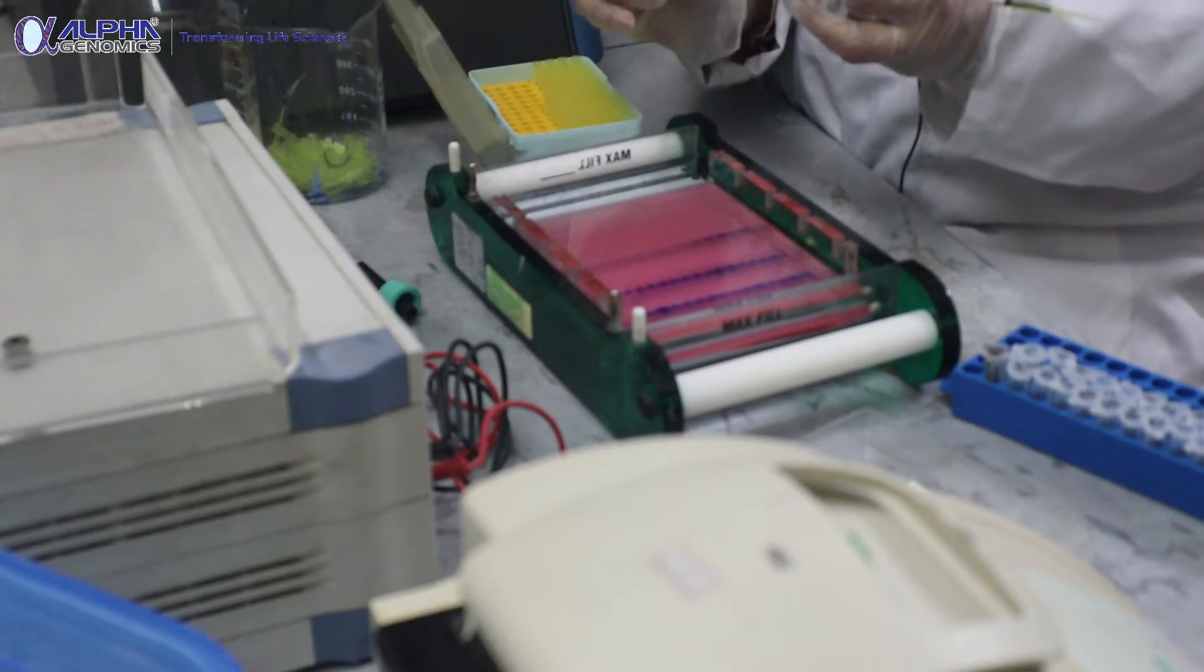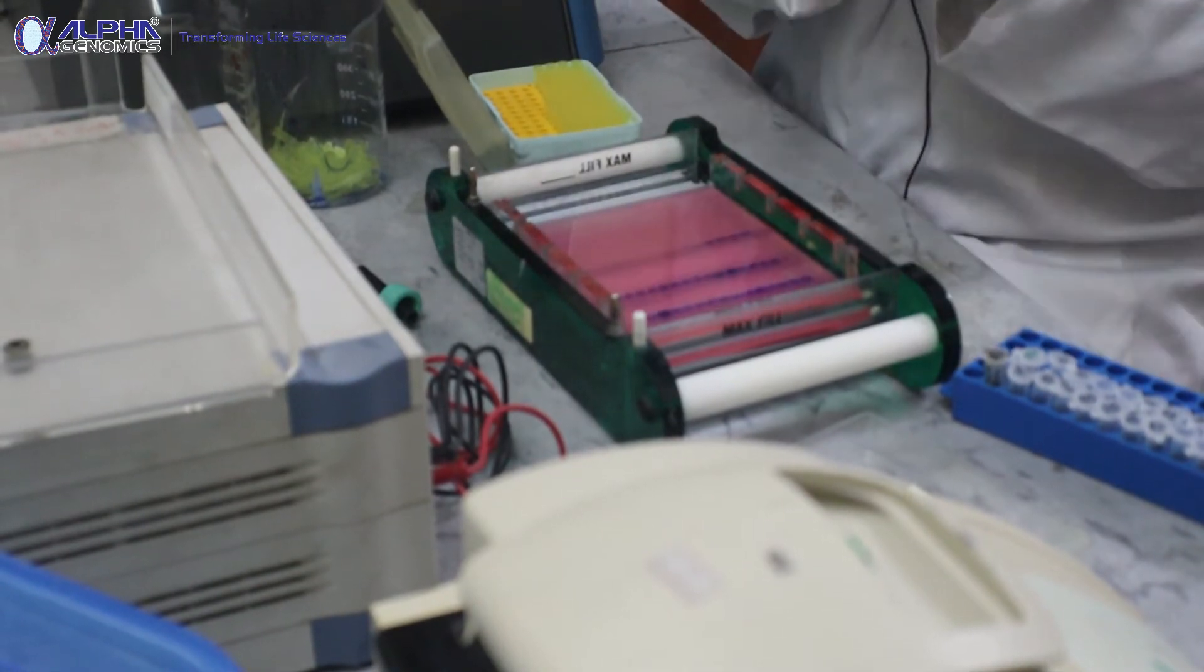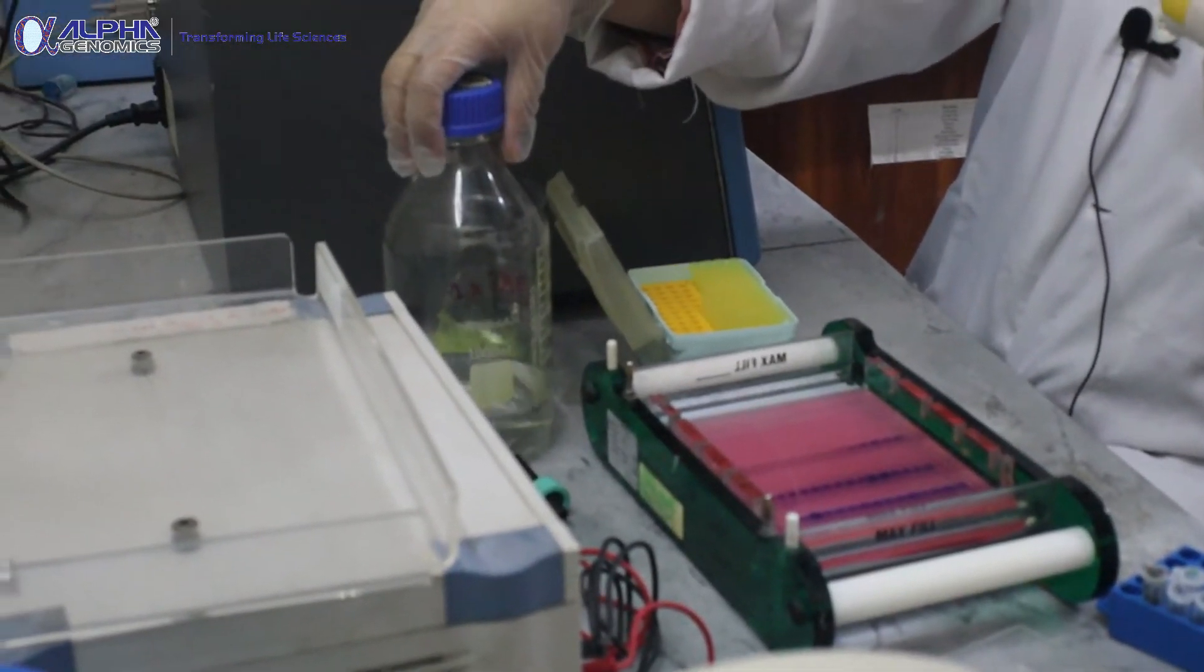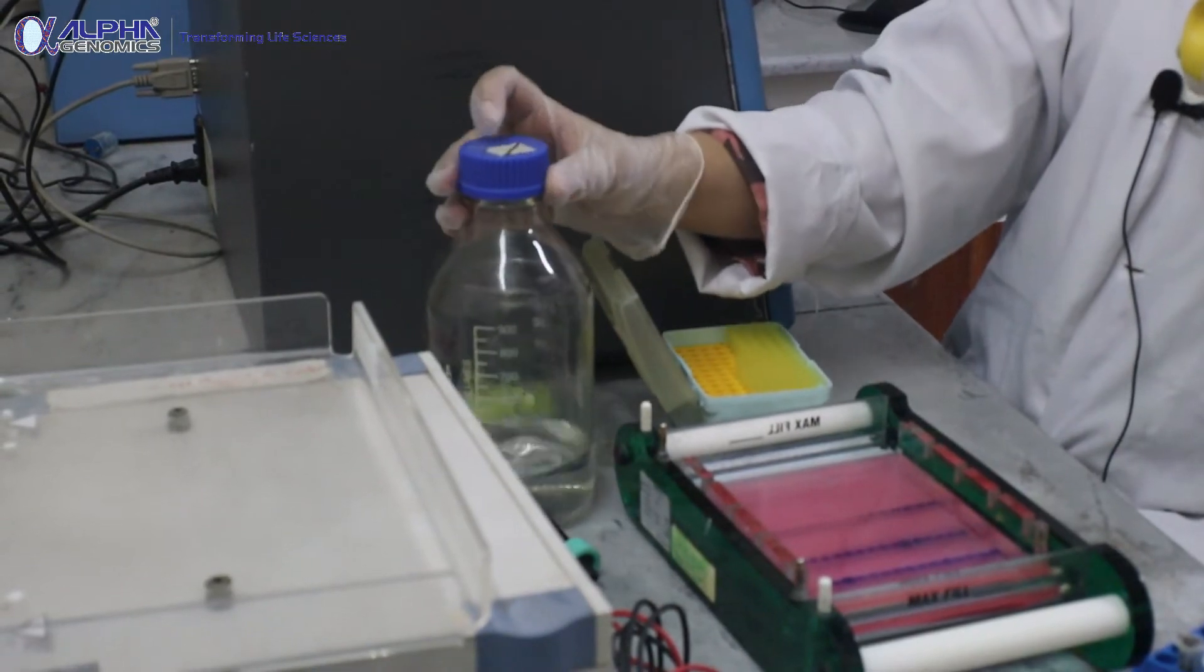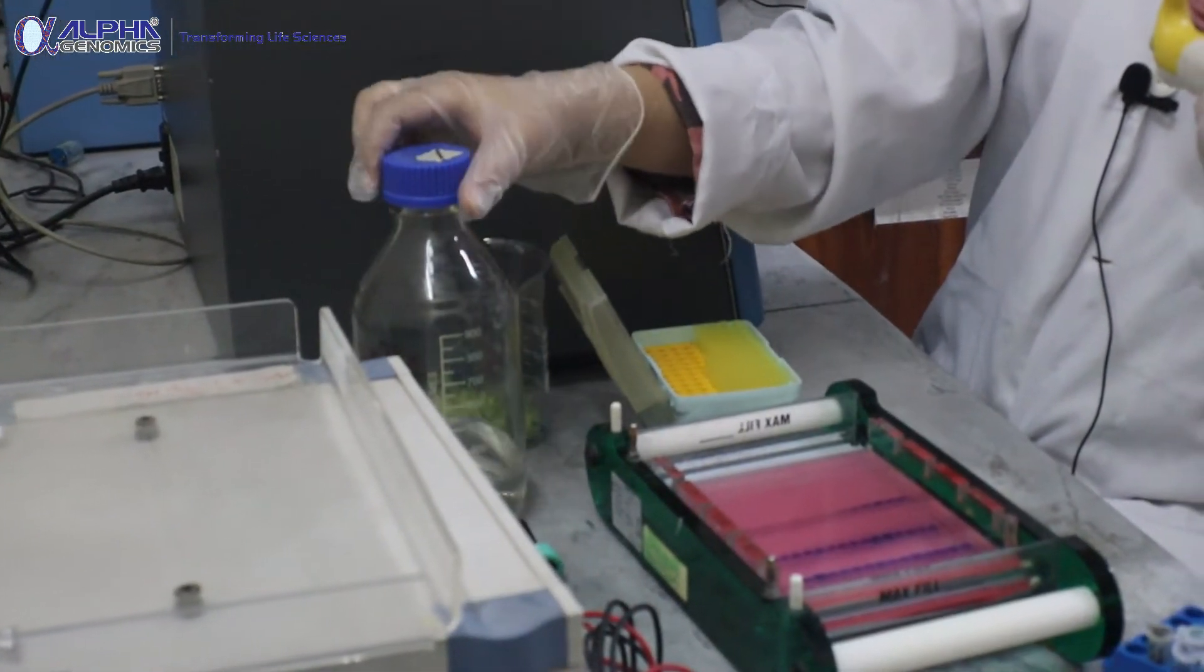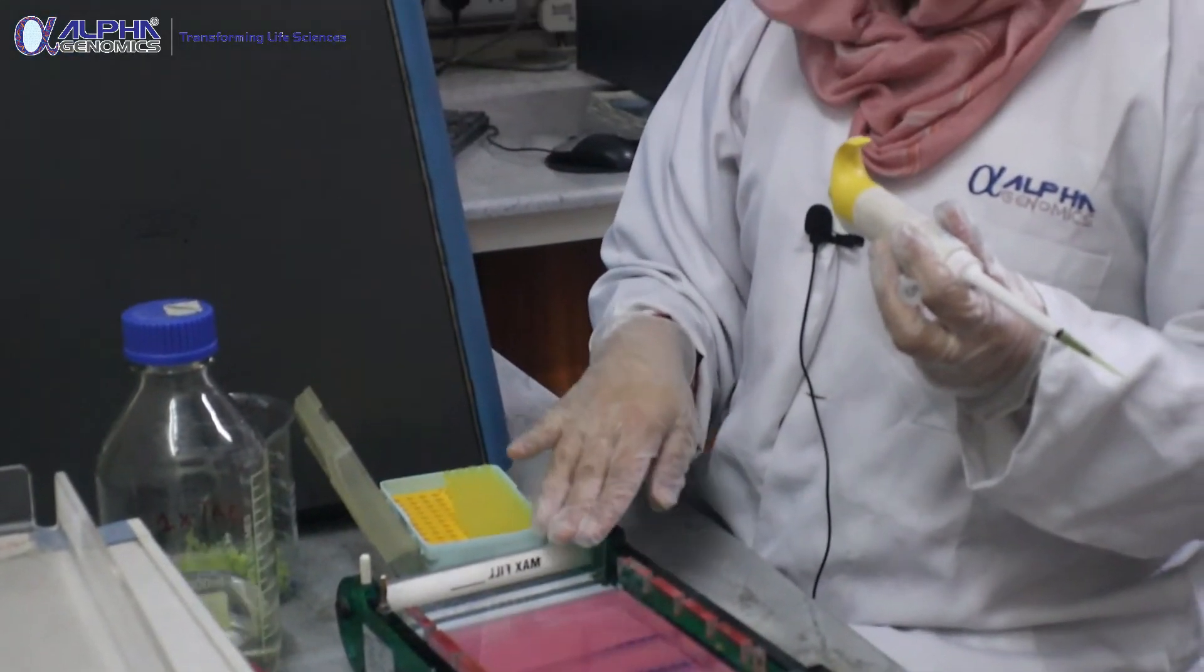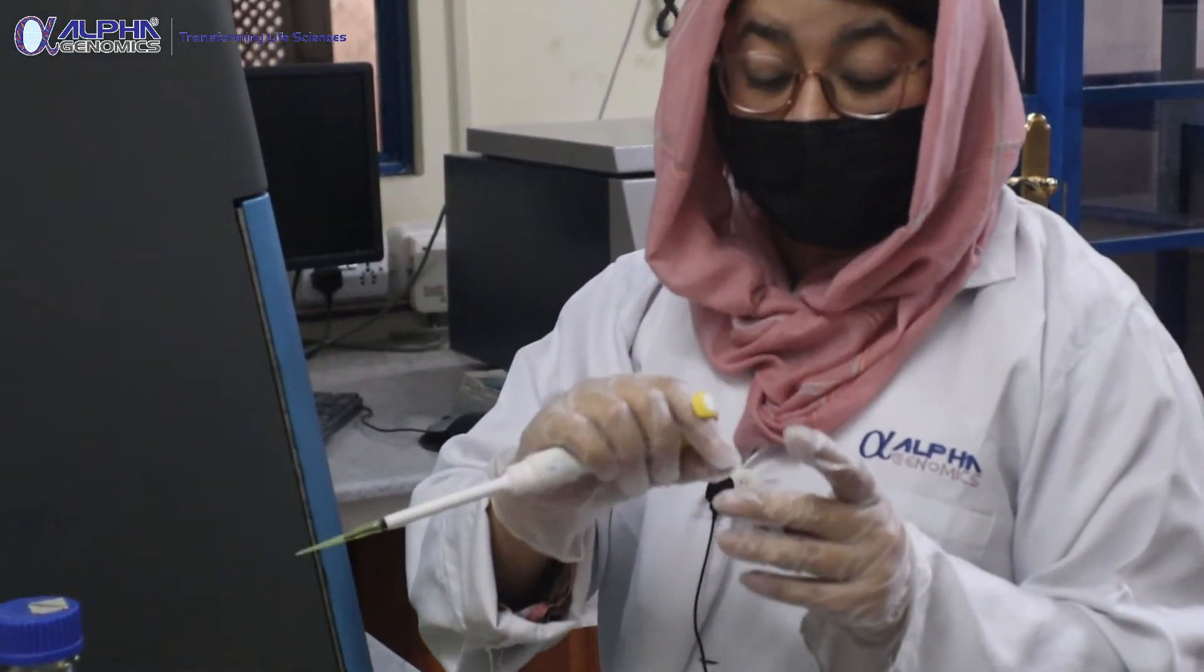For you to use them in the working solution you have to dilute them. Right now over here you can see I am using 1x TAE. I have already prepared it and the bottle was autoclaved. The running buffer and the buffer in which I have prepared the gel is 1x TAE.